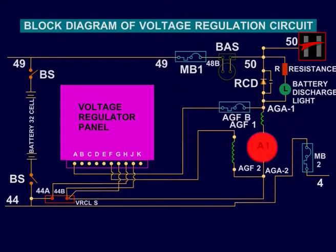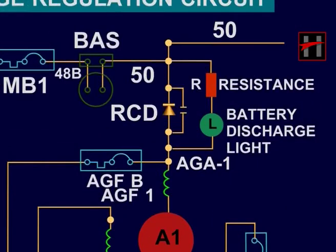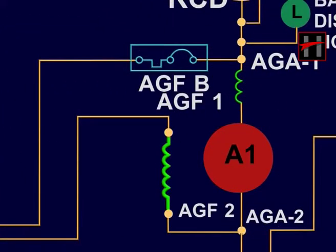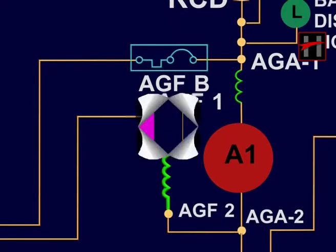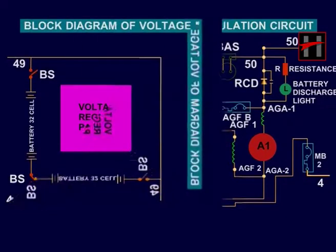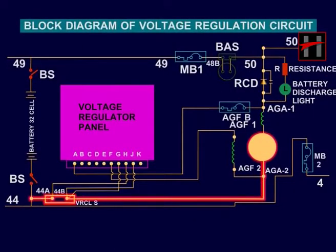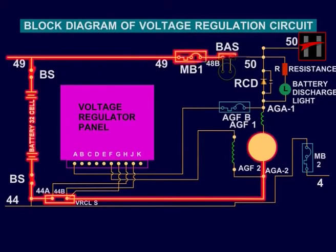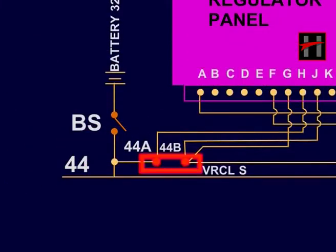The auxiliary generator is connected between cable number 50, RCD, AGF2, VRC-LS to cable number 4. The RCD prevents the discharge of the battery into the auxiliary generator when the AG is not working. The feedback from VRC-LS is connected to VRP for load current control.